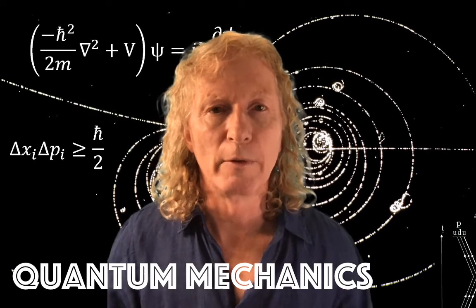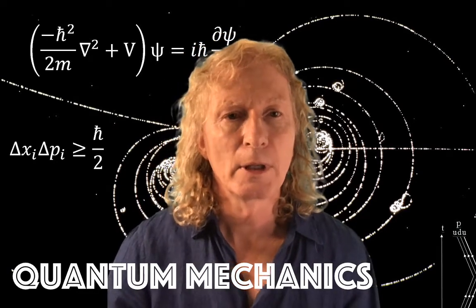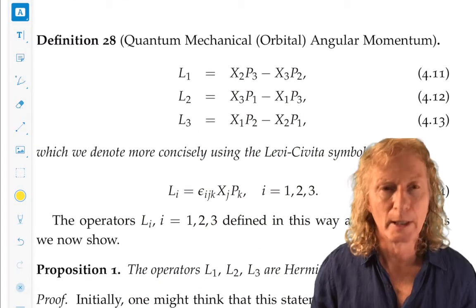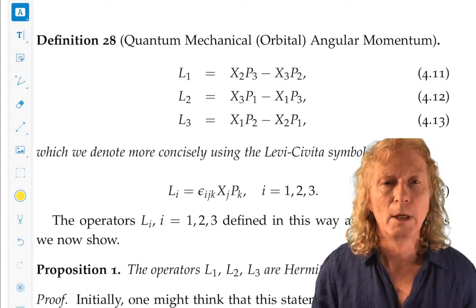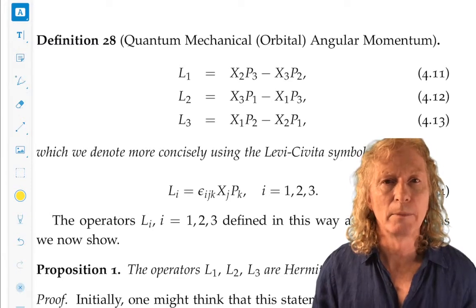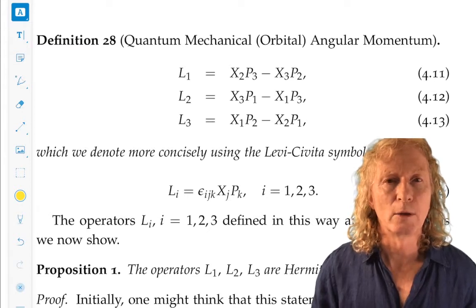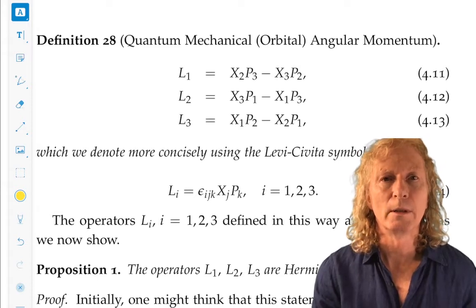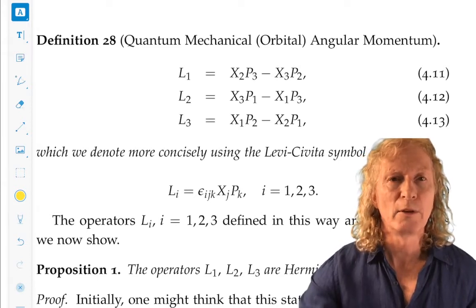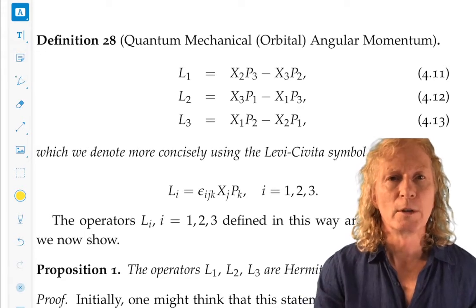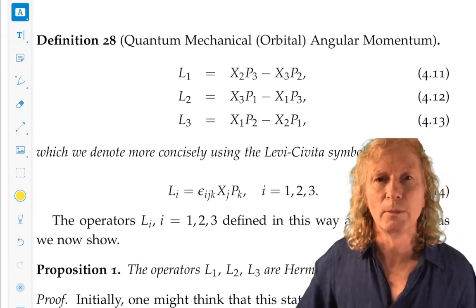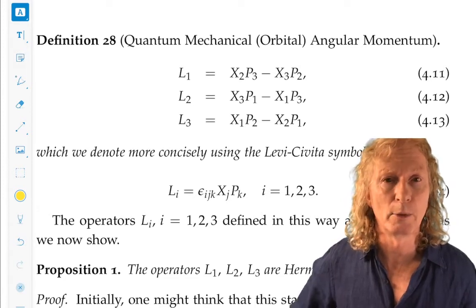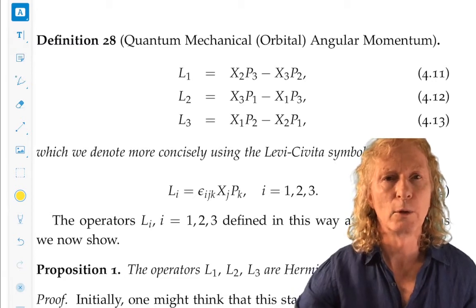More quantum theory of angular momentum. Last time we defined what we meant by quantum mechanical orbital angular momentum. We considered a particle of constant mass m and looked at its classical mechanical orbital angular momentum about the origin. We quantized that in the obvious way by replacing position coordinates and momentum coordinates with the corresponding quantum mechanical operators, self-adjoint operators. And this is what we have for L1, L2, and L3.